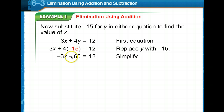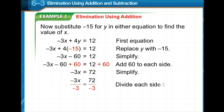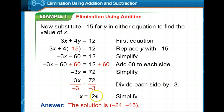Now we take negative 15 and substitute it in for y in one of the equations — it doesn't matter which. We'll choose the first equation and substitute negative 15 in for y. Simplify: 4 times negative 15 is negative 60. To isolate x, add 60 to both sides, leaving negative 3x equal to 72. Divide both sides by negative 3, so x equals negative 24. Our solution: x is negative 24, y is negative 15 — ordered pair (−24, −15).